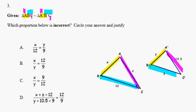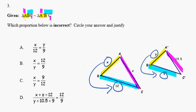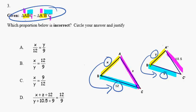Now the point of this problem is to see which of these proportions is incorrect. So let's check one by one. The first proportion is trying to relate the yellow on the big triangle to the turquoise on the big triangle, and asking: is that equal to the yellow on the small triangle to the turquoise on the small triangle? When we compare one side of a triangle to another side of the same triangle, we call that an internal ratio. Since they're similar, the yellow to the turquoise must be the same as the yellow to the turquoise of the other triangle. So this one is correct.